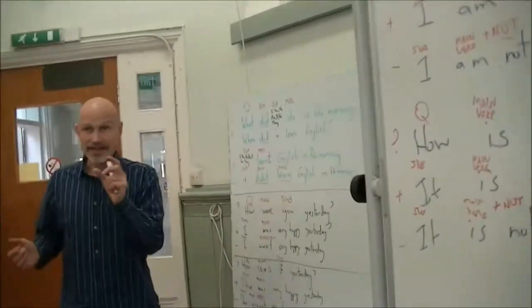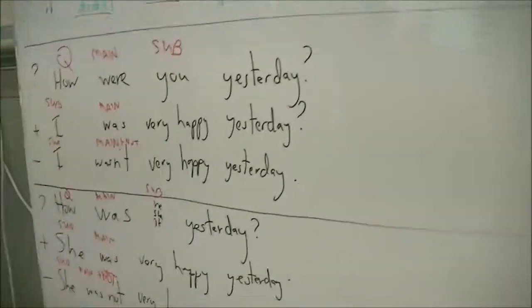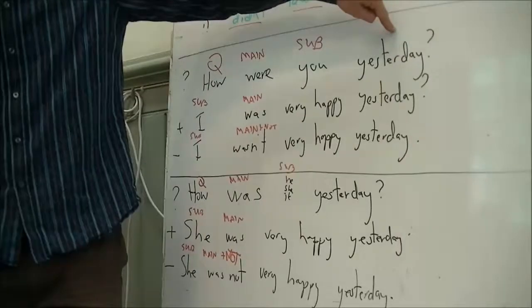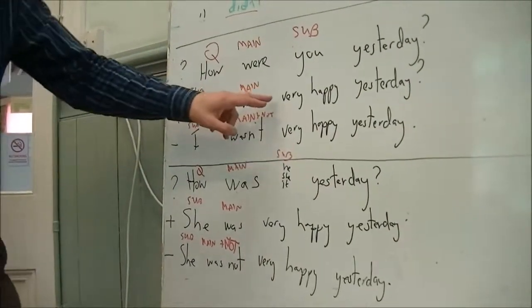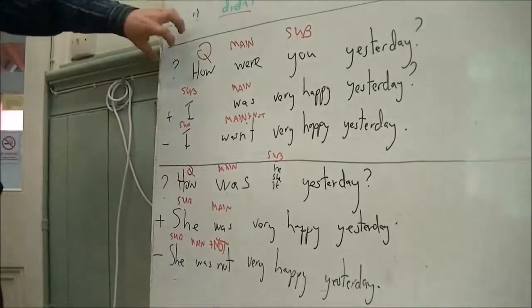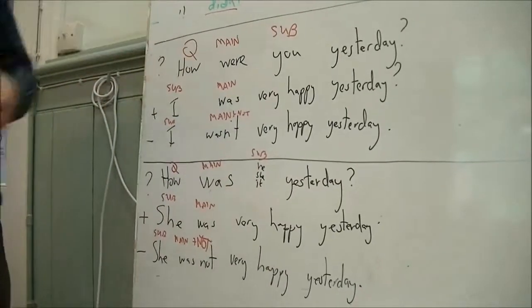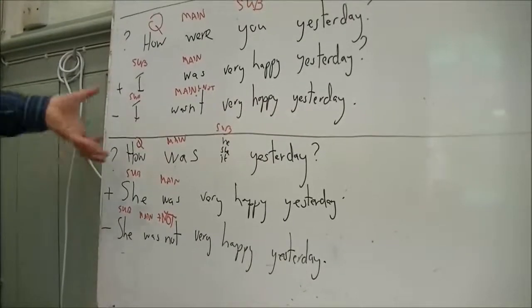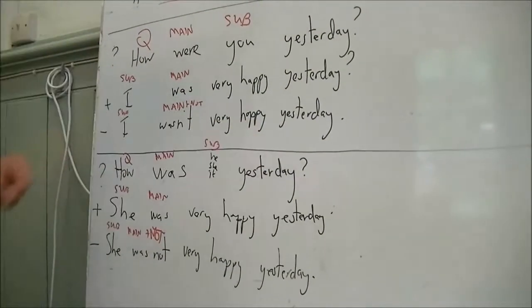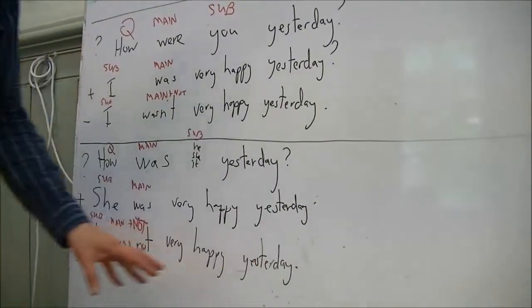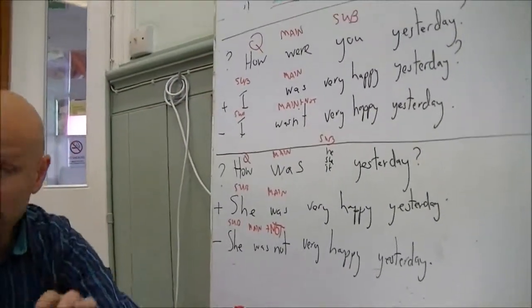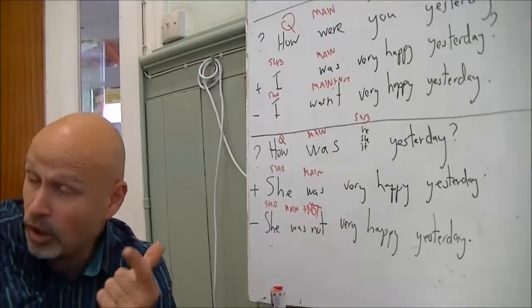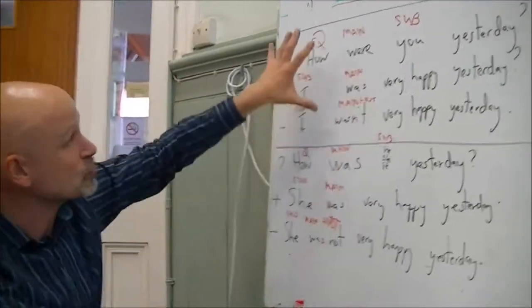In the past, it's a little bit easier. We change the main verb. 'How were you yesterday? I was very happy yesterday. I was not very happy yesterday.' Question word with the main verb and subject — just the subject and that main verb, no other verbs in the sentence. With he, she, it, we use the same structure: 'How was she yesterday? She was very happy yesterday, or she was not very happy yesterday.' The verb 'to be' is different in the past — there are two different ways in the past and three different ways in the present.